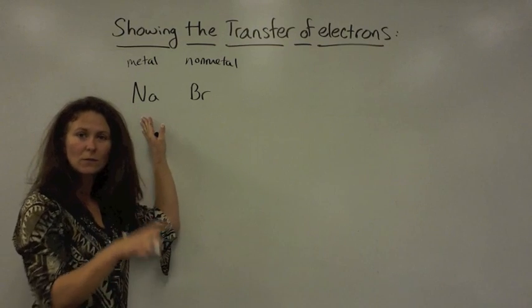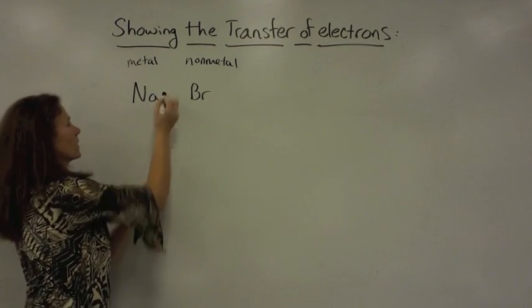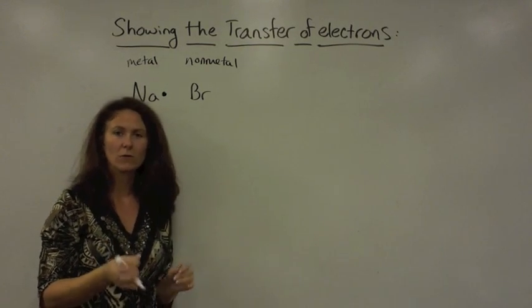Sodium, as you can see on the periodic chart, is in group 1A, so it has one valence electron. We're going to represent that one valence electron with one dot.